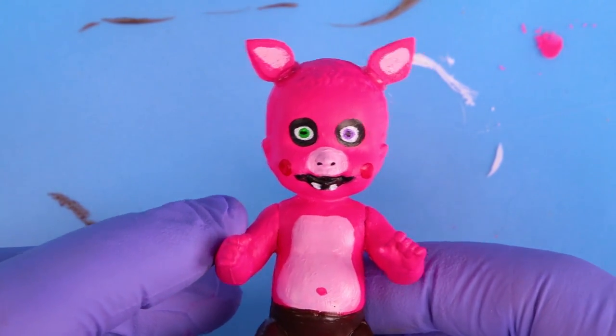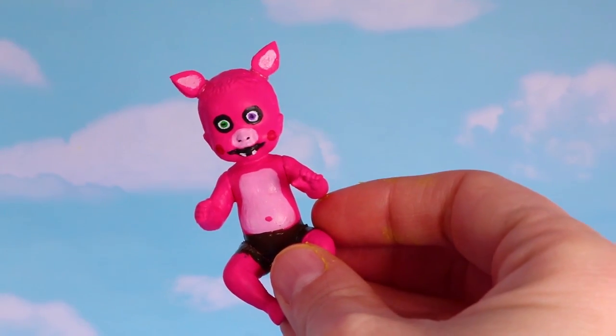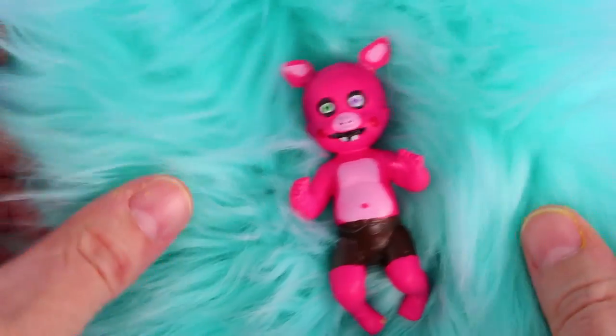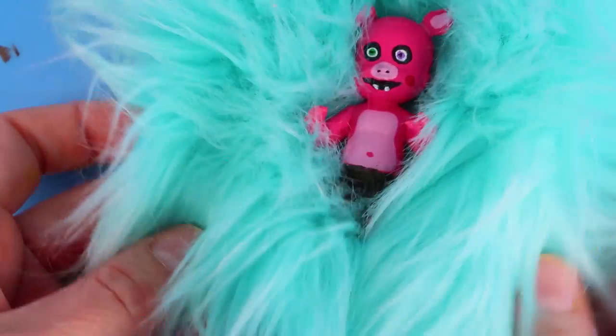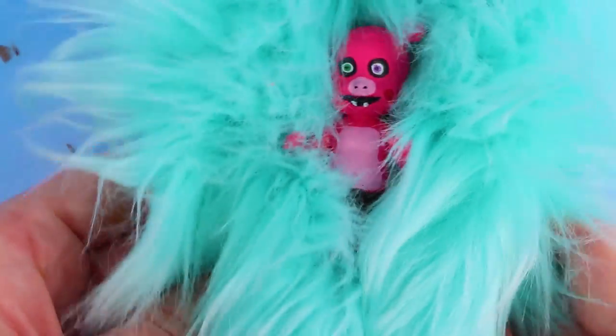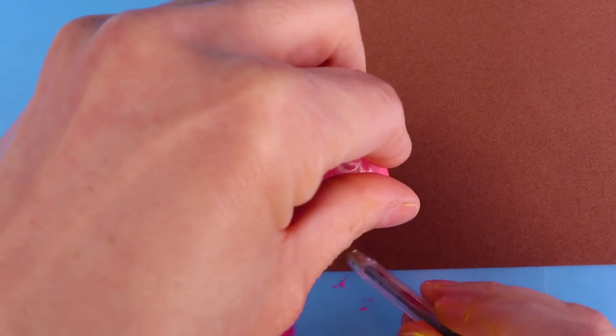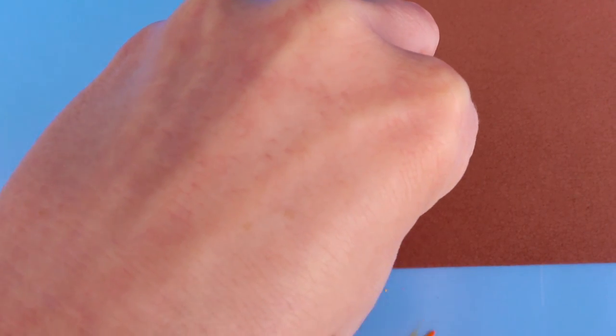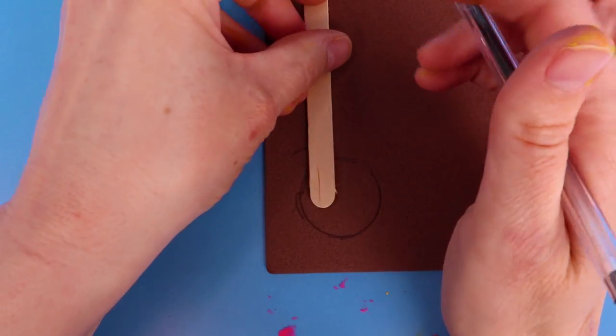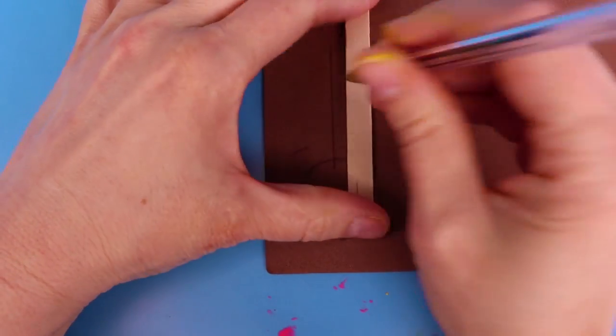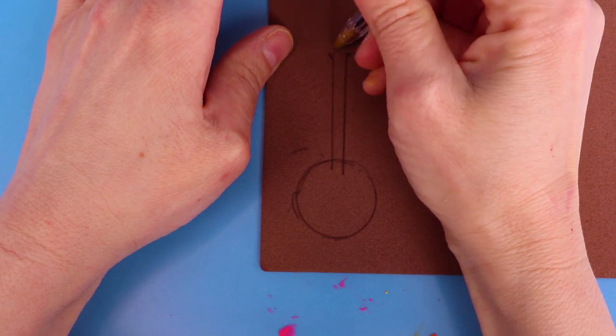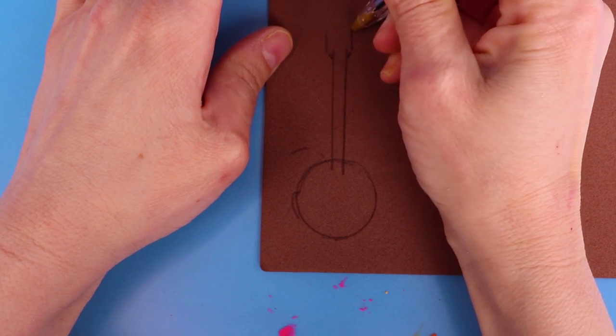He is a little bit scary. I don't know if this is the scariest one I've ever made, but this one is quite interesting. Quite creepy. It's a little piggy baby. Okay, now Pig Patch has a banjo and so I thought it would be fun to make the banjo as well. I used a puff paint bottle to make the circle and a popsicle stick to draw the neck of the banjo.